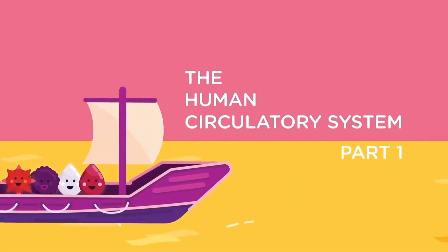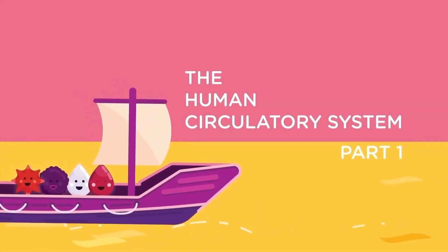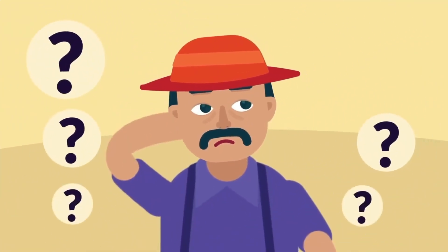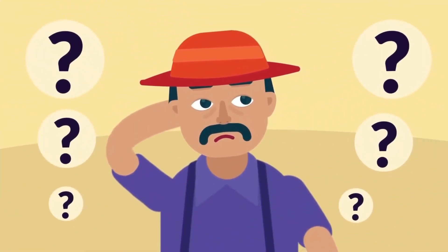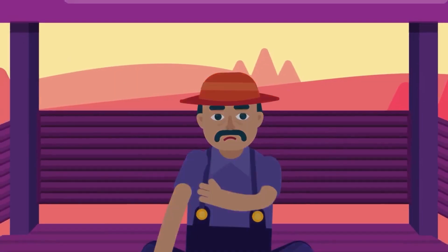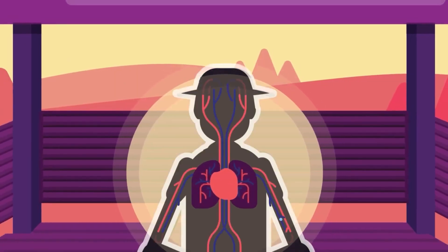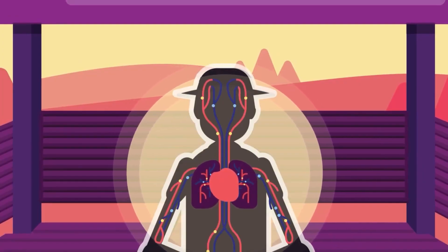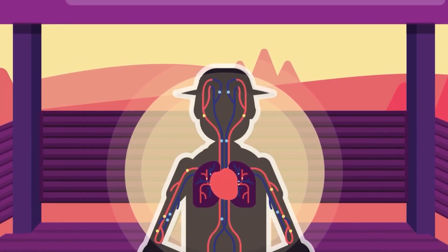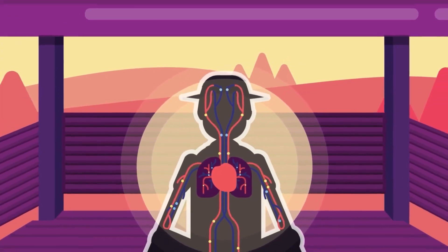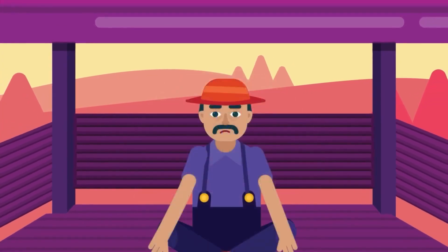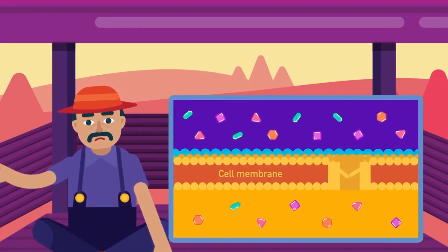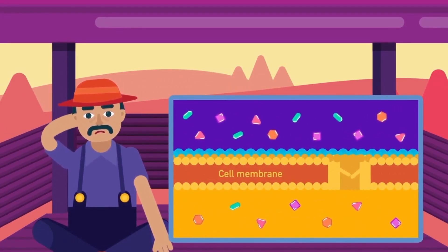The Human Circulatory System, Part 1. Why do we need a circulatory system? It is to ensure that the nutrients from the food we eat and the oxygen from our breathing reach all cells of the body effectively. However, if we recall our previous lessons, diffusion can also do the same.